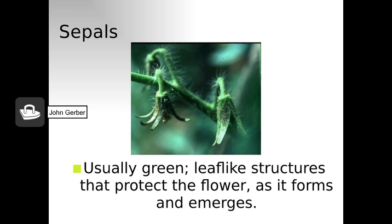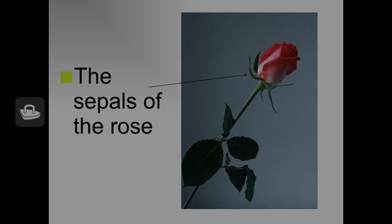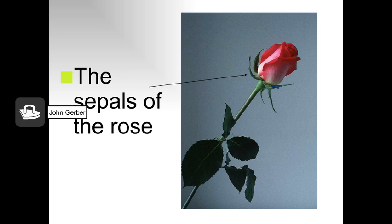Here you see the sepals of a tomato flower beginning to open. The sepals are small, green, and leaf-like structures located at the base of the flower. They protect the flower bud, and because they contain chlorophyll, they can actually produce sugars through photosynthesis. The hard green sepals of the tomato bend back as the flower opens. You may also be familiar with the very sharp sepals of a rose.